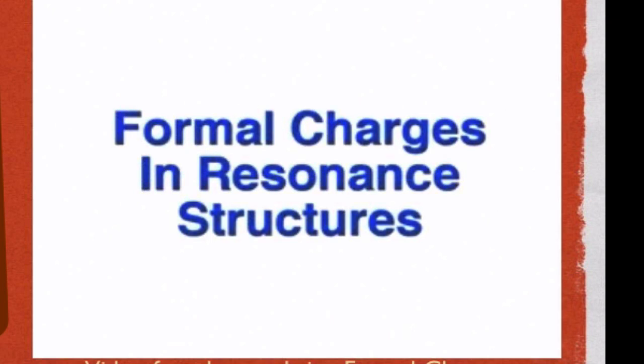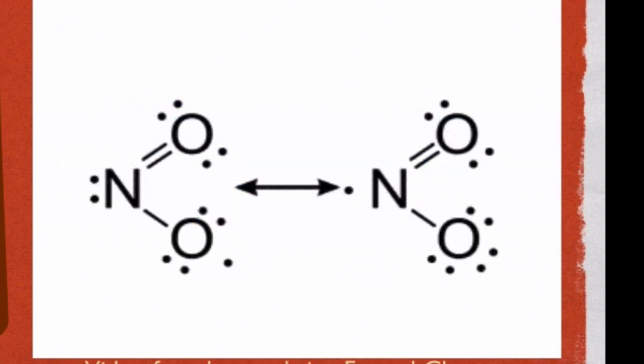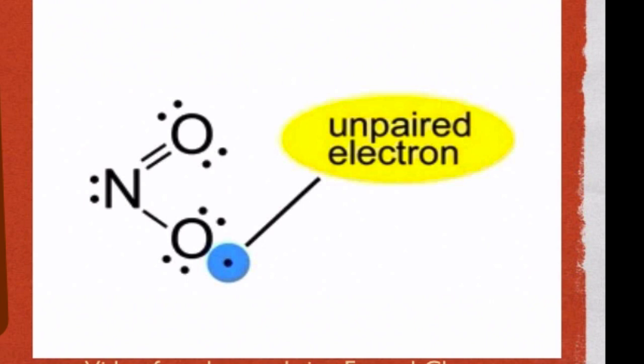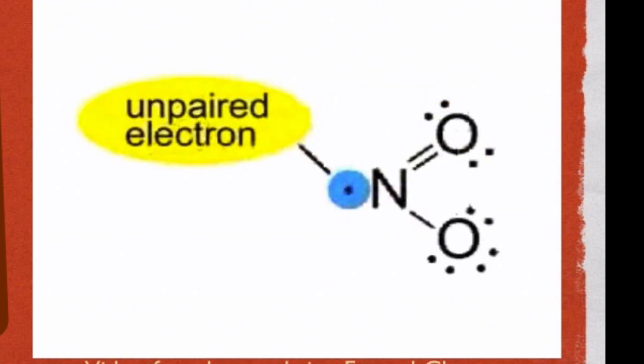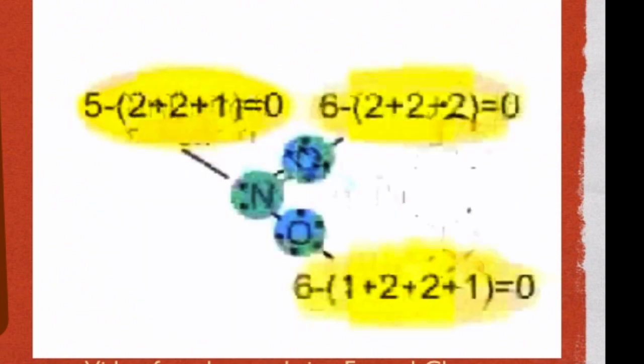Formal charges can also be helpful in evaluating alternative resonance structures. Let's consider nitrogen dioxide, a molecule that contains an odd electron. We can draw two reasonable Lewis structures. But which more closely describes the nitrogen dioxide molecule? Notice that in one structure, the unpaired electron is on oxygen, and in the other, it's on nitrogen.